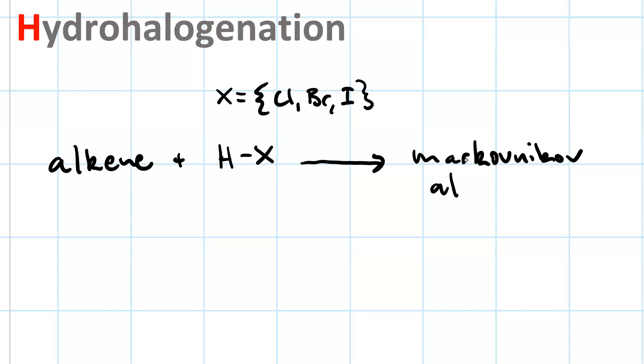Hydrohalogenation is a kind of addition reaction. Your substrate is an alkene, and your reagent is a halo acid, HCl, HBr, or HI. And the product is going to be a Markovnikov alkyl halide.